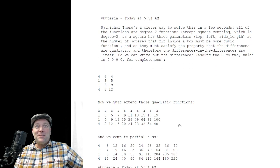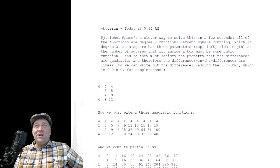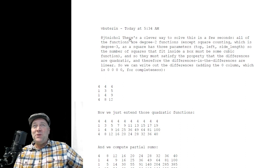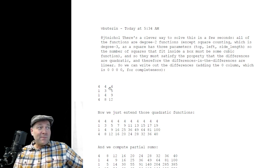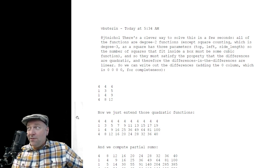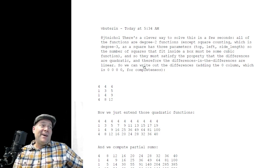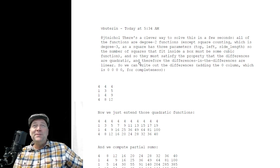And then he replied back this morning. He goes, there's a clever way. This is at 5:34 a.m. There's a clever way to solve this in a few seconds. All of the functions are degree 2 functions, except square counting, which is a degree 3. As a square has three parameters, top, left, and side length. So, the number of squares that fit inside a box must be some cubic function. And so they must satisfy the property that the differences are quadratic. What does quadratic mean? I'm telling you, I remember something about quadratic once upon a time.